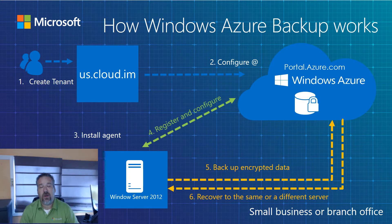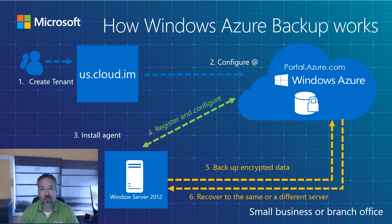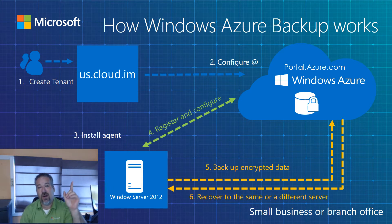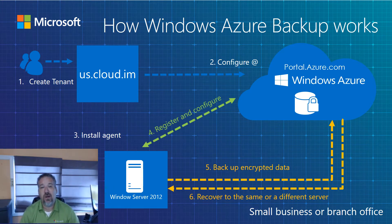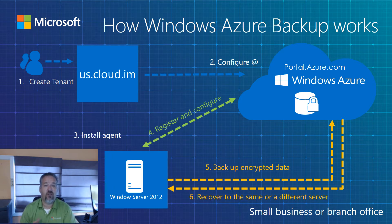To get started, the first step would be to go to us.cloud.im — that's where you would create your customer's Azure tenant. I'm not going to go through that process here, but if you look up on the screen you'll find another video I did on creating a tenant in Cloud Marketplace. That will get you to portal.azure.com. Once you get the credentials, you're going to log into portal.azure.com and start configuring your backup solution for your customer.